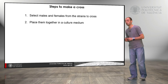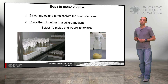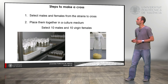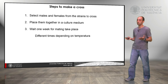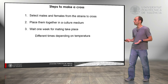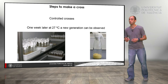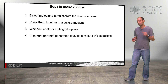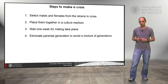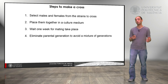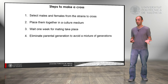Then we place the flies together in a culture medium — we should select 10 males and 10 virgin females. Normally 10 is a good number to make the crosses, and we have to wait until mating occurs. We can use different temperatures to make the cycle faster or slower: at 27°C, in one week we have the new generation — new eggs, larvae, and pupae. The fourth step is to eliminate the parental generation, because otherwise we will not be able to distinguish which flies are from the parental generation and which are from the F1 generation.